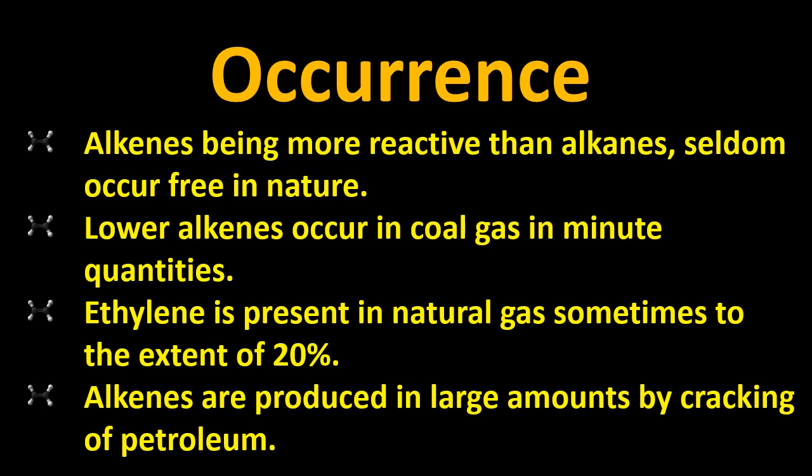Now the occurrence. From where we get it? What's the origin? Alkenes being more reactive than alkanes seldom occur free in nature. As they are reactive, so they mostly form in combined state, not always. Lower alkenes occur in coal gas in minute quantities. Ethylene is present in natural gas sometimes to the extent of 20%. Alkenes are produced in large amounts by cracking of petroleum.